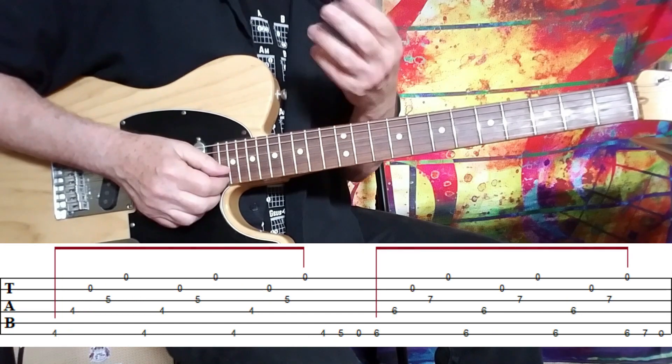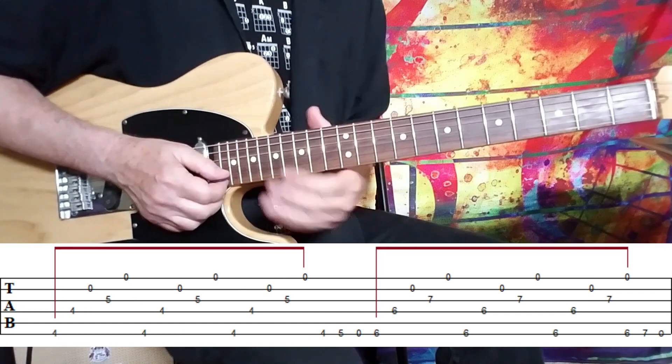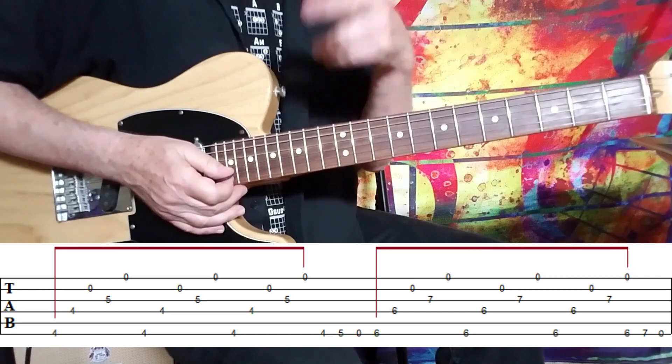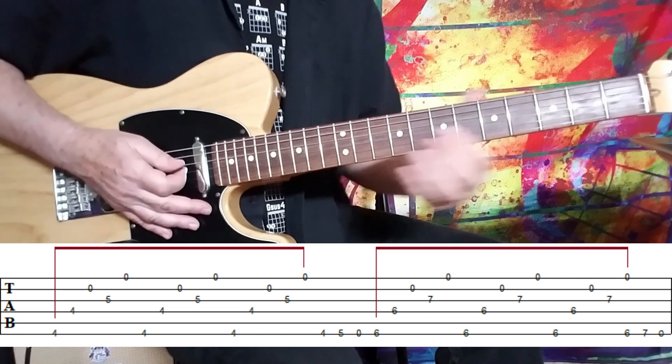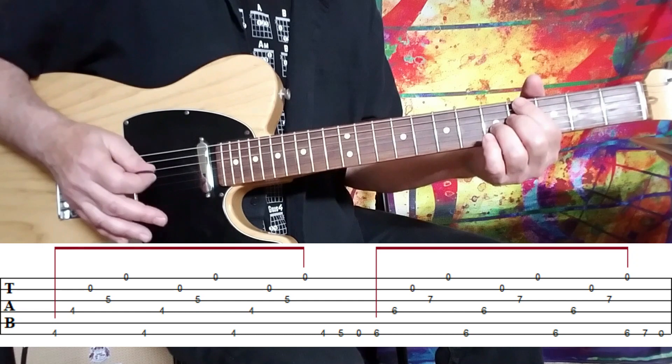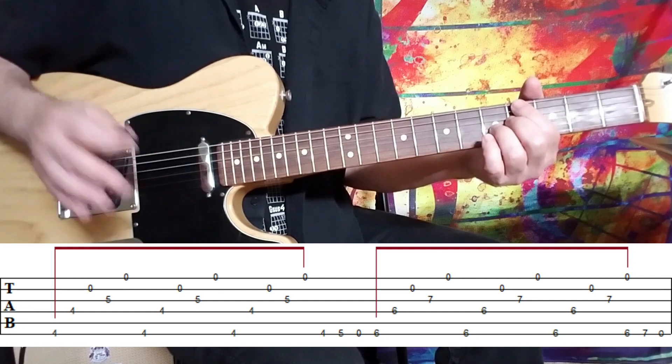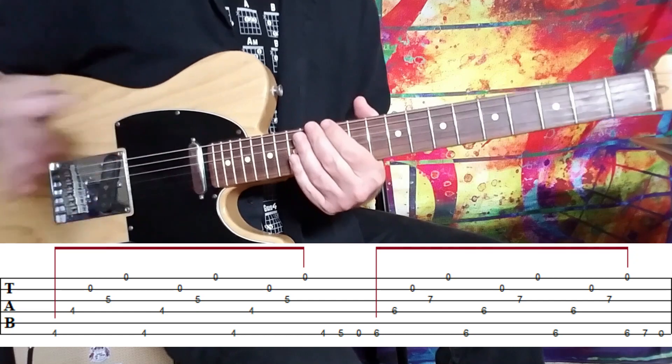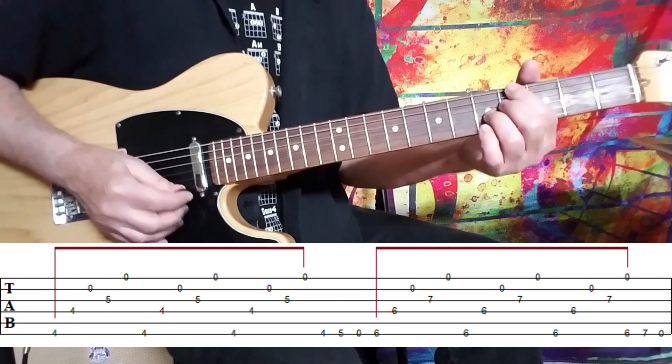Now John McLaughlin lists this as being in 18/8 time, okay? And what he means is the full cycle before it turns around. But you can count it out as one two three four five, one two three four five, one two three four five, one two three, okay? If you do need to count it out.